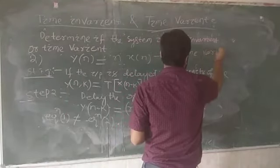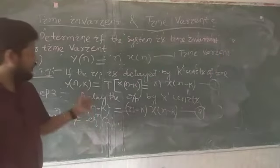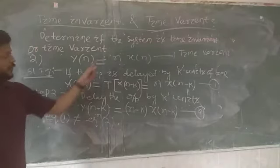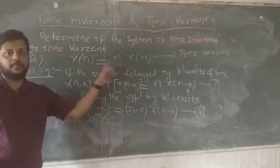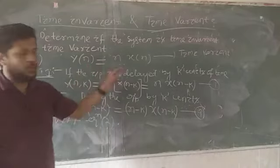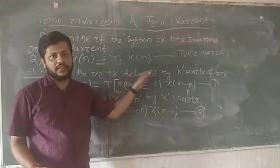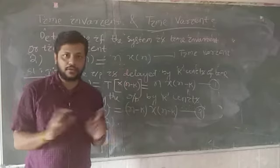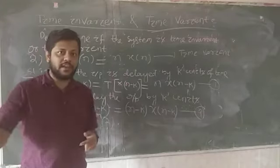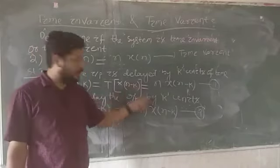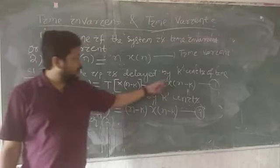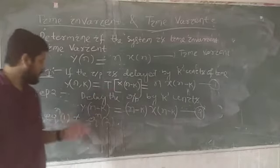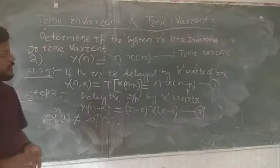Since equation one is not equal to equation two, it is proved that this system is a time variant system. Remember: when delaying only the input, replace only what is inside x(·); when delaying the output y(n-k), replace every n with n-k in the entire equation. This is the key distinction in this two-step method.